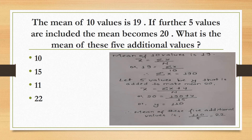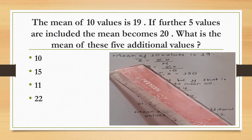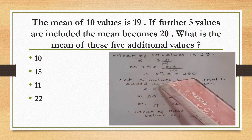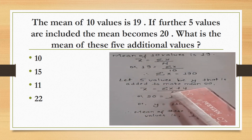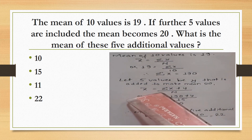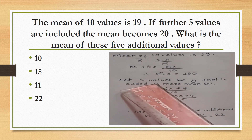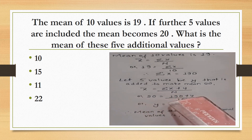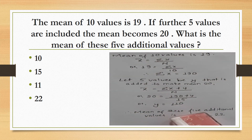The mean of 10 values is 19. If further 5 values are included, the mean becomes 20. What is the mean of these 5 additional values? The mean of 10 values is 19, so the sum is 190. With 15 values and mean 20, the total sum is 300. So the sum of the 5 additional values is 300 minus 190 equals 110. The mean of the 5 additional values is 110 by 5, which equals 22.